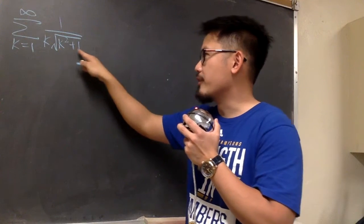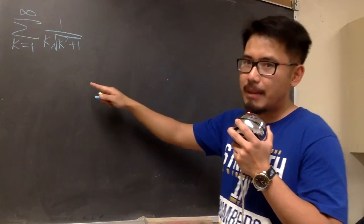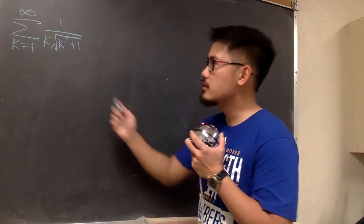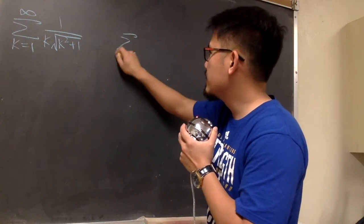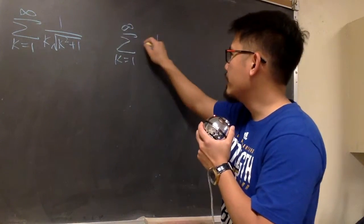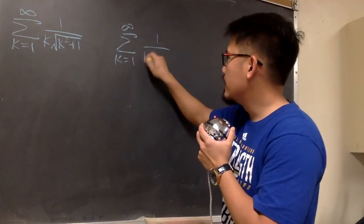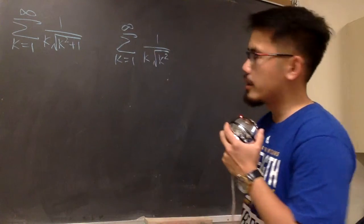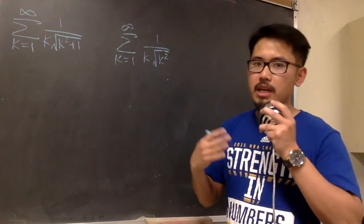For this expression, 1 over k times the square root of k squared plus 1. First, I'm going to ignore the plus 1 in the square root in the denominator. So I'm going to look at sigma when k goes from 1 to infinity, and we have the 1 over this k, and then we have just the square root of k squared.